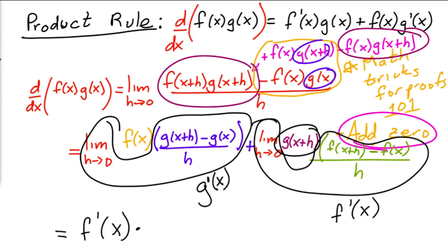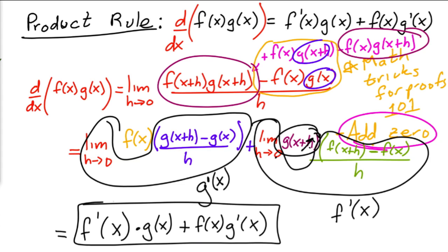times g(x+h). As h goes to zero, this is going to be just g(x), and then plus f(x) times g'(x). And that's it, it's the proof of the product rule. And the proof of the quotient rule is very similar.